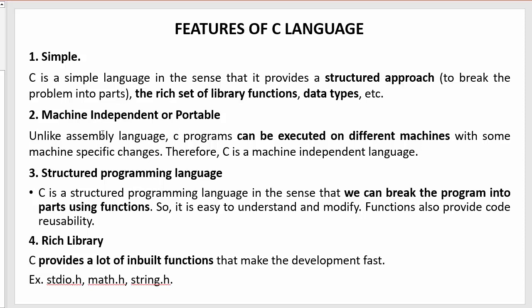The next feature is machine-independent or portable. Unlike assembly language, C programs can be executed on different machines with some machine-specific changes. Therefore, C is a machine-independent language. Assembly language comes under mid-level programming language. I have made another video on assembly language which is available in the same playlist — I recommend you to watch that video as well.